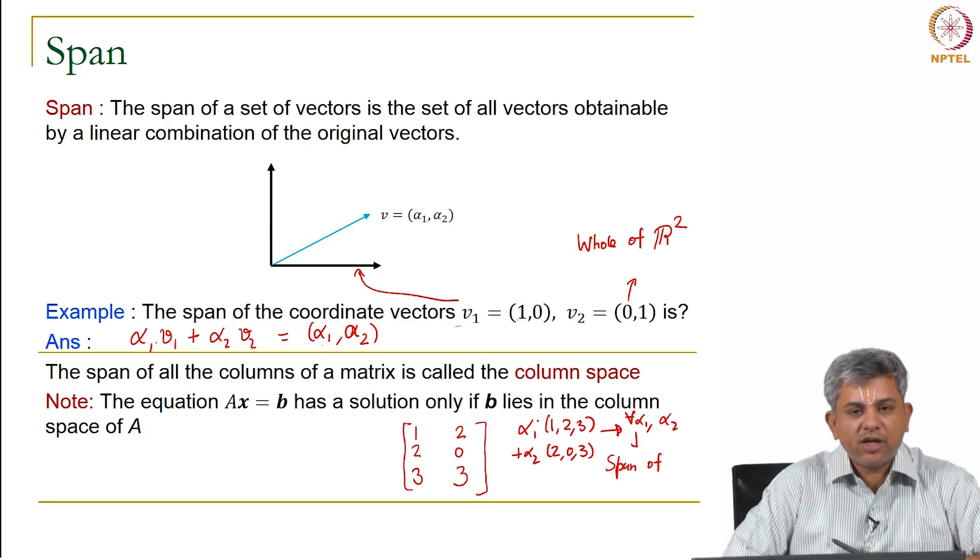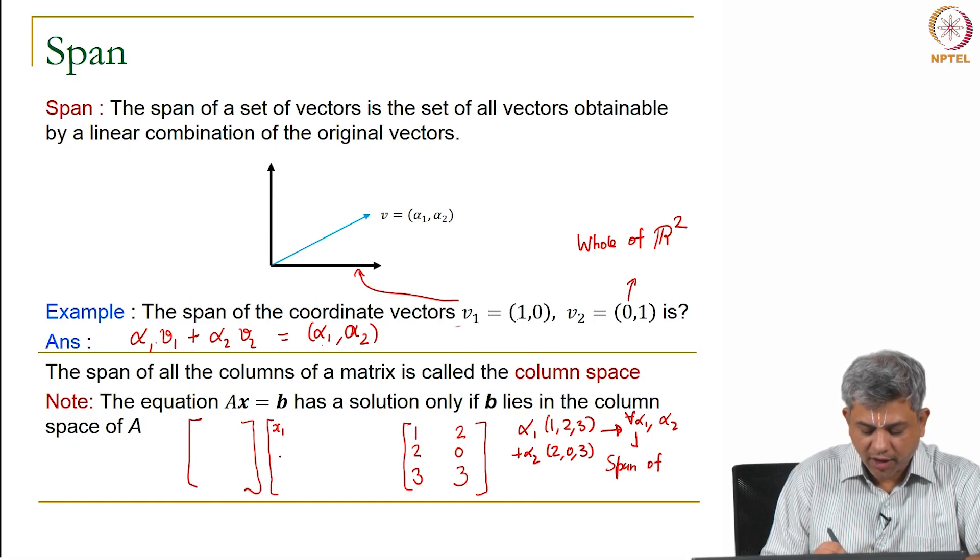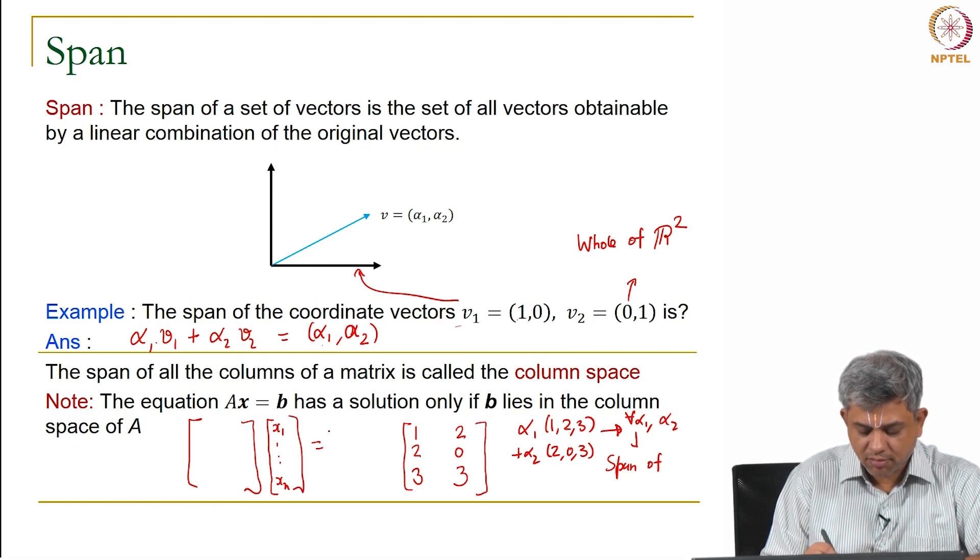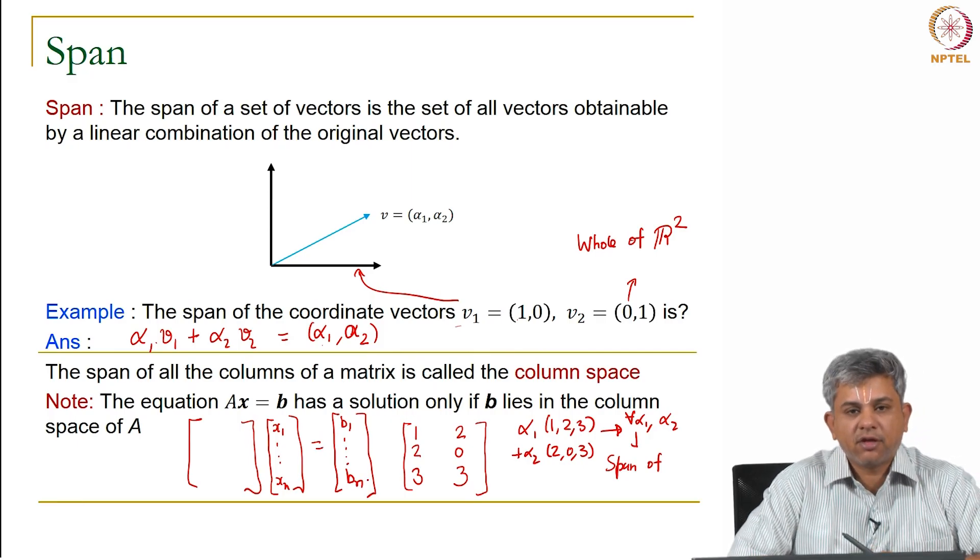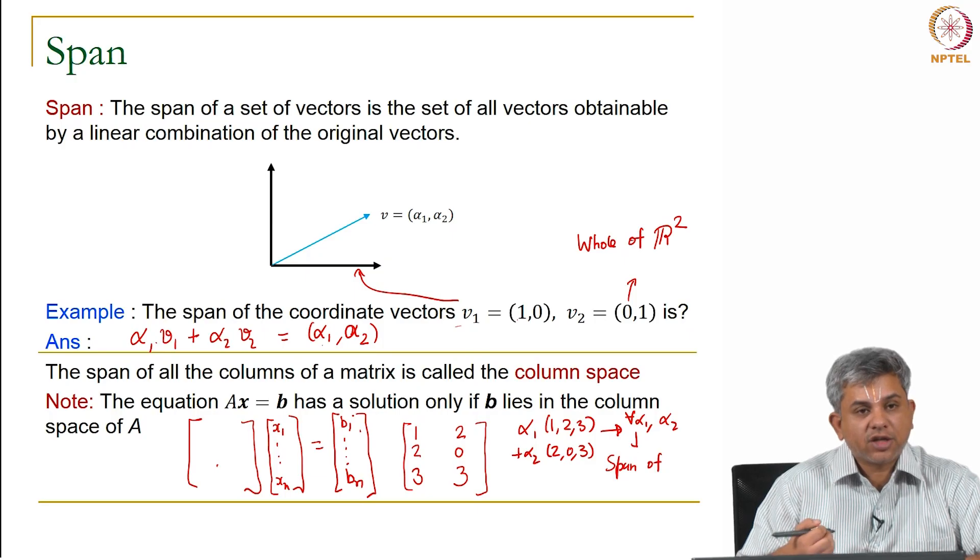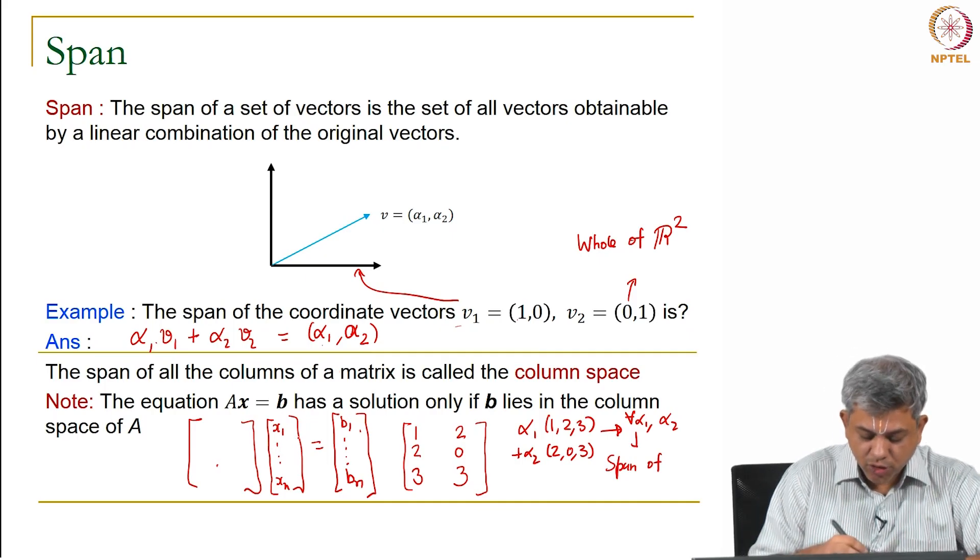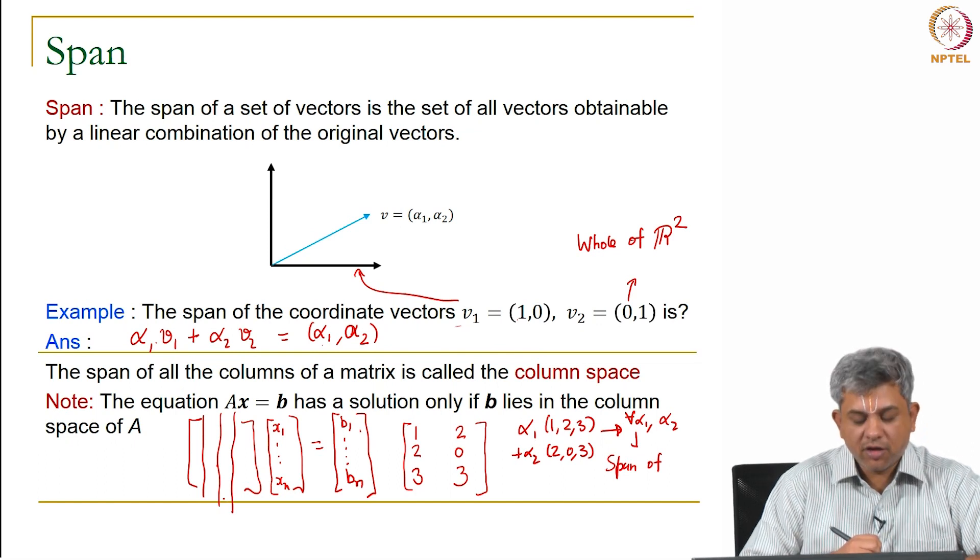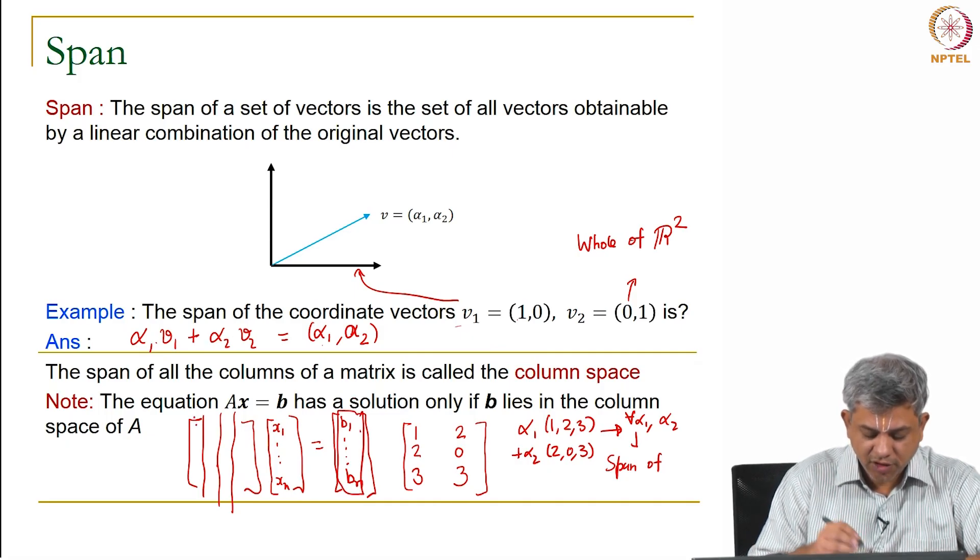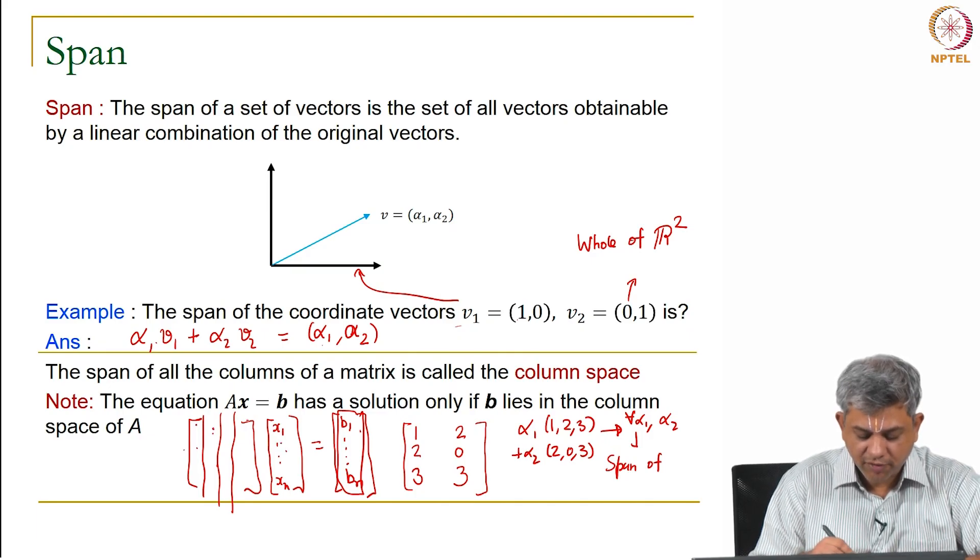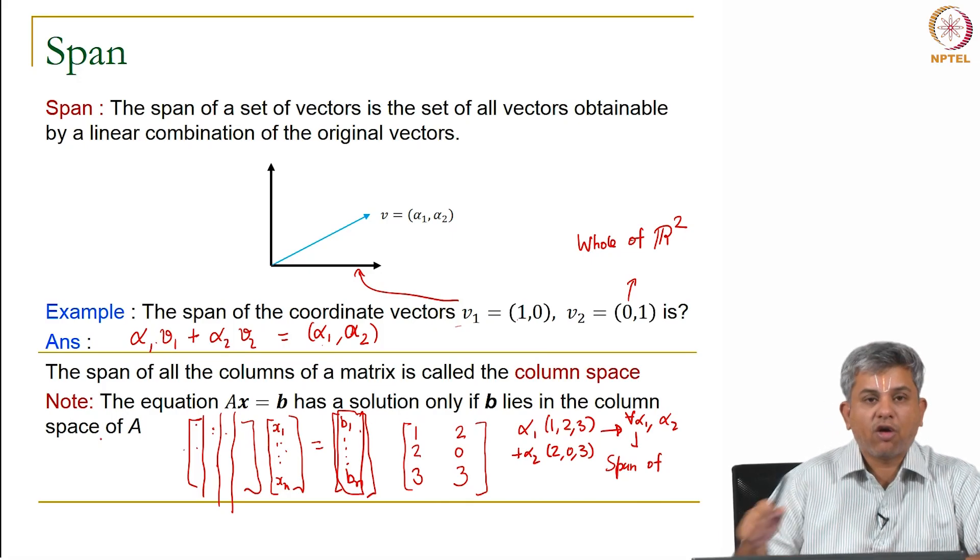Now notice that if I have an equation AX = B, where I have some matrix A, some vector X, and I'm obtaining some vector B. If this equation has a solution, it automatically means that B has to be in the column space of A. Why? Because this vector B is simply the linear combination of the first column multiplied by X1, the second column multiplied by X2, and so on. It automatically means B is in the column space of A.